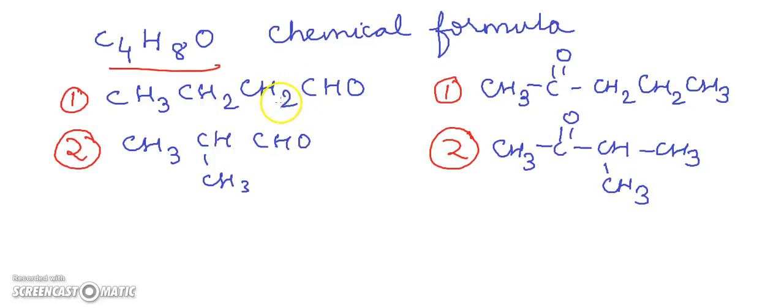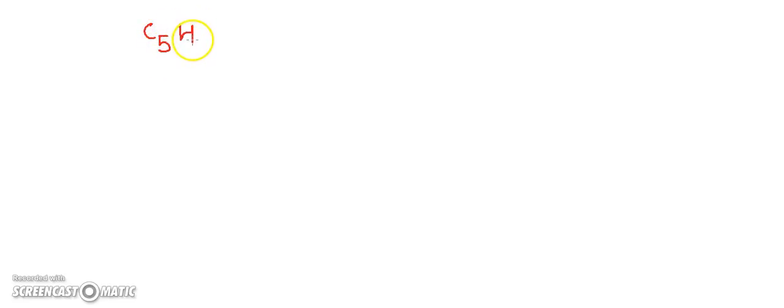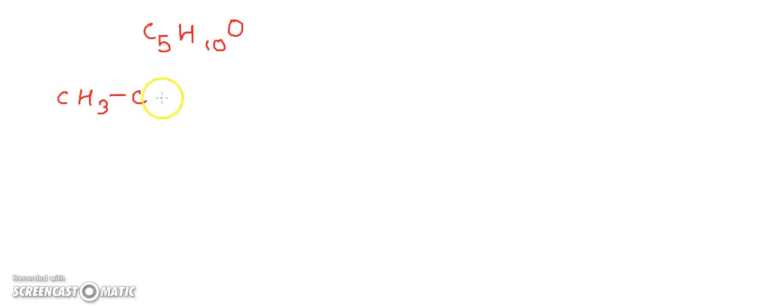Next we have position isomerism. In position isomerism, the isomers have the same chemical formula but differ in the position of the carbonyl group. For example, we can take the chemical formula C5H10O.